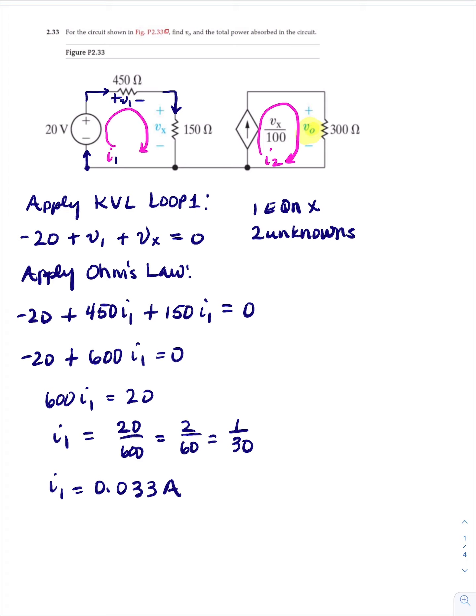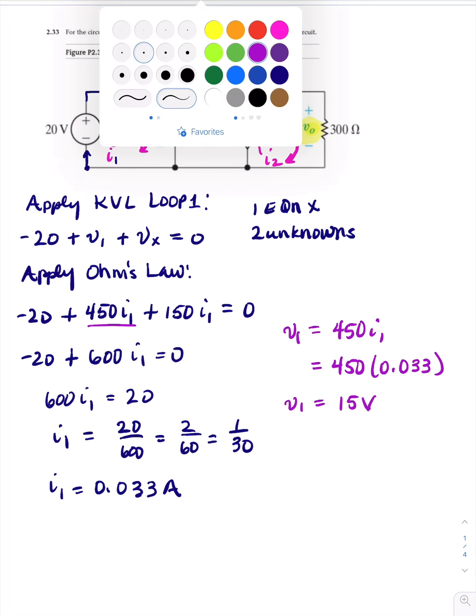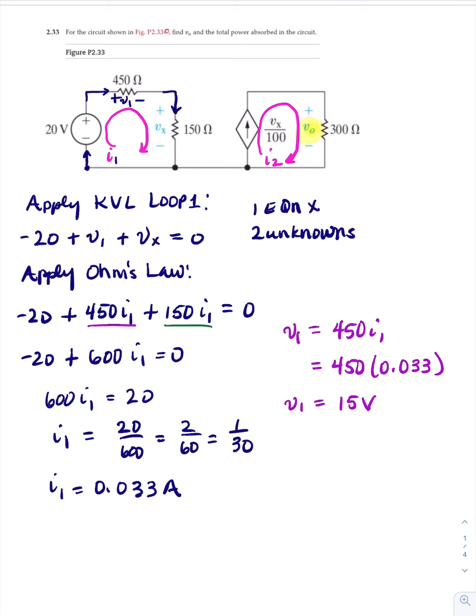Now we can say that V sub one is 450 I sub one, which is 450 times 0.033, so V sub one equals 15 volts. And V sub X equals 150 I sub one, which equals 150 times 0.033. So V sub X equals 5 volts.